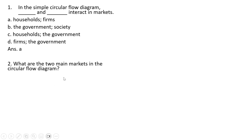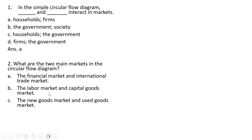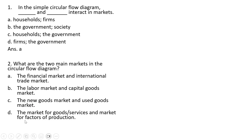Question 2: What are the two main markets in the circular flow diagram? The correct answer is D. The market for goods and services and the market for factors of production.